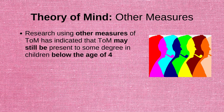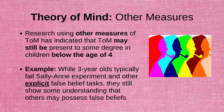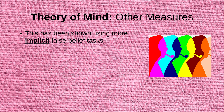However, research using other measures of theory of mind has indicated that theory of mind may still be present to some degree in children below the age of four. Research has shown that while three-year-olds typically tend to fail the Sally-Ann task and other more explicit forms of the false belief tasks, they still show some understanding that others may possess false beliefs. This has been shown using more implicit forms of the false belief task.